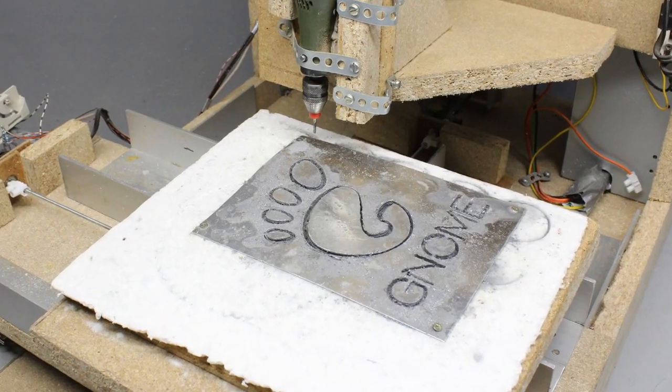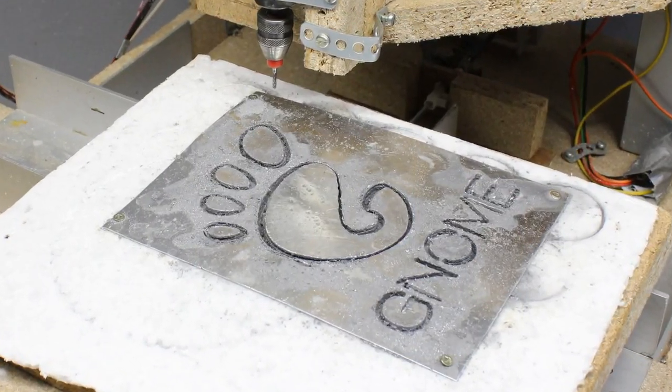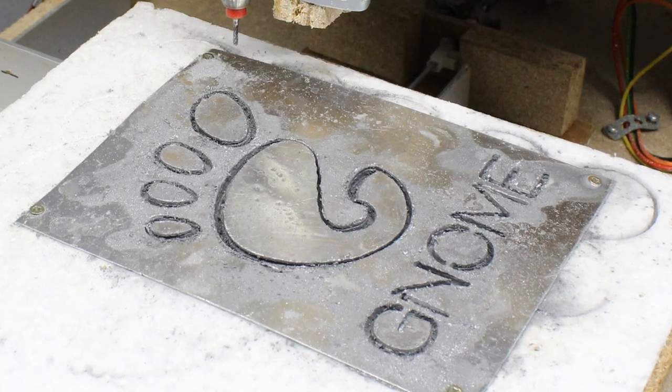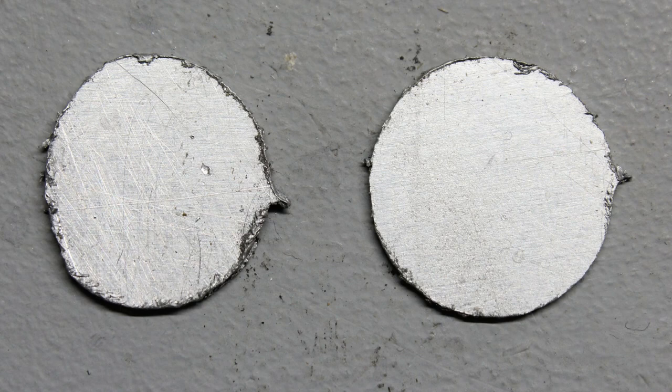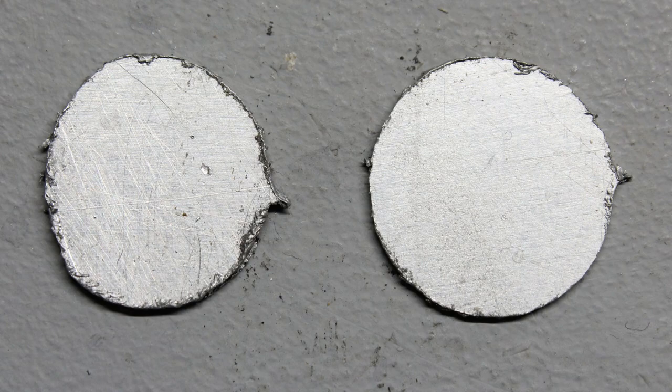The result is eventually acceptable, but definitely not very good. Before cutting, you should have a close look at your CNC. The left aluminum disc with a diameter of 18mm was cut before and the right disc after readjusting the machine.